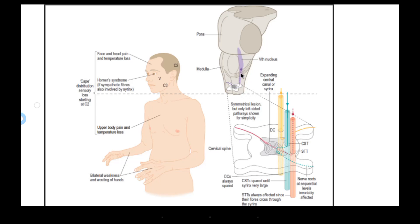In syringobulbia, the syrinx can originate in or extend up into the brainstem. When brainstem involvement occurs, the spinal trigeminal nucleus — the fifth cranial nerve nucleus — becomes involved. This leads to loss of pain and temperature sensation over the ipsilateral anterior face.